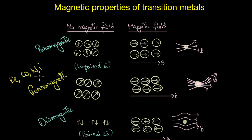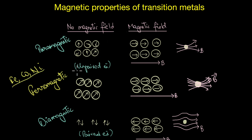The compounds of these elements exhibit magnetic properties even in the absence of a magnetic field, which is why these materials can form permanent magnets. Since transition metals have plenty of unpaired d electrons, in this video we are going to be talking mainly about paramagnetism exhibited by transition metals.